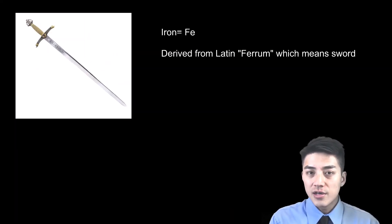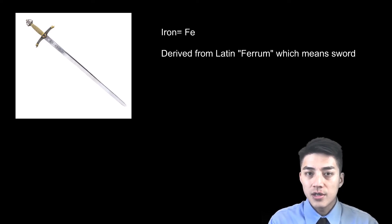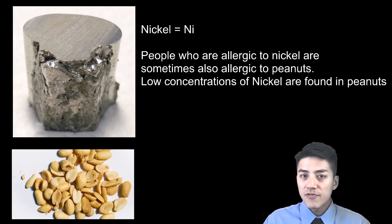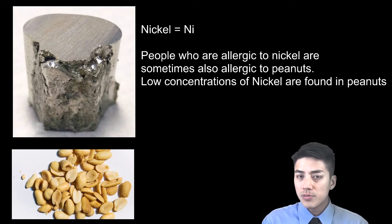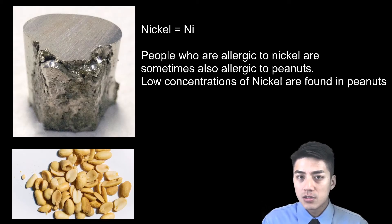Iron, strangely enough, is Fe. The symbol Fe is derived from the Latin word ferrum, which means sword. Swords in ancient times were forged from iron. Here's a fun fact about nickel allergies: some people who are allergic to nickel might also be allergic to peanuts. That's because peanuts are grown in soil which has low concentrations of nickel.